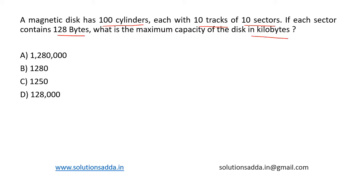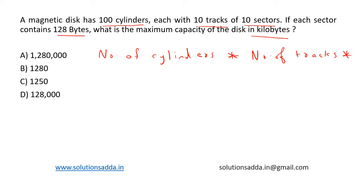The formula to calculate the maximum capacity is: number of cylinders multiplied by number of tracks, multiplied by number of sectors per track, multiplied by the size of each sector.